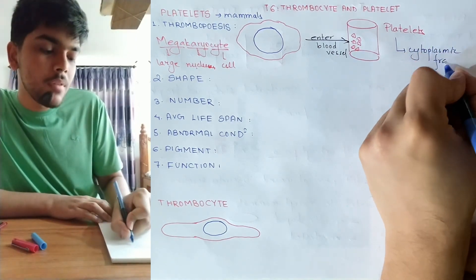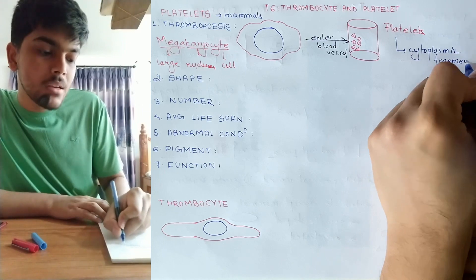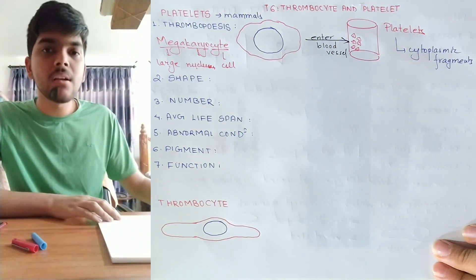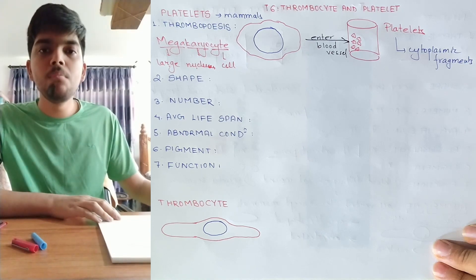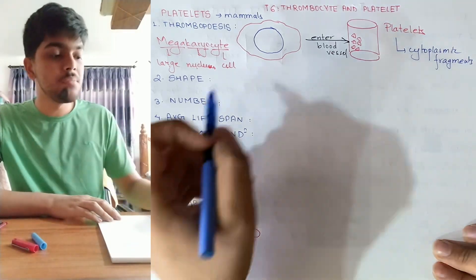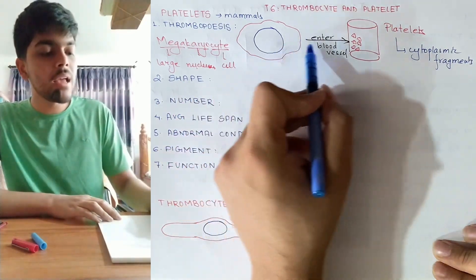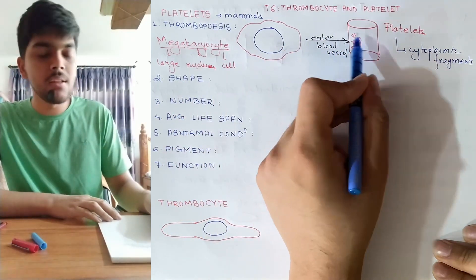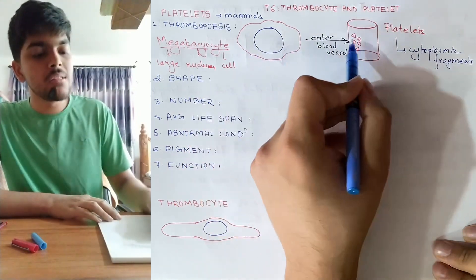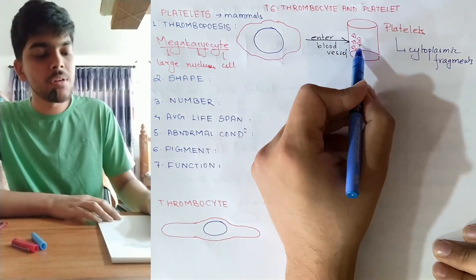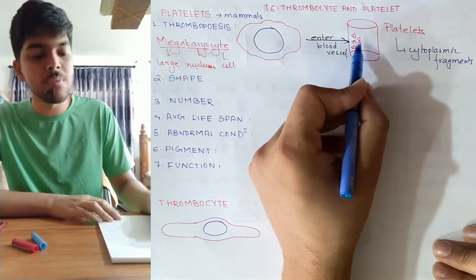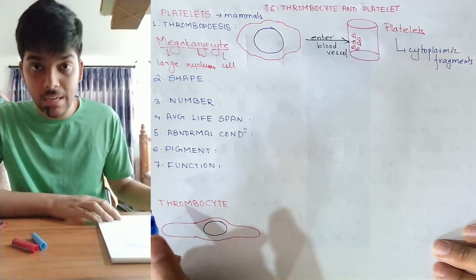These small fragments of the cytoplasm of the megakaryocyte are known as platelets. From this, you can understand that platelets are not actually cells — they are instead small pieces of cytoplasm of a pre-existing cell, the megakaryocyte. When the megakaryocyte breaks down while entering the blood vessel, its cytoplasm breaks into smaller fragments, and these cytoplasmic fragments are actually the platelets.